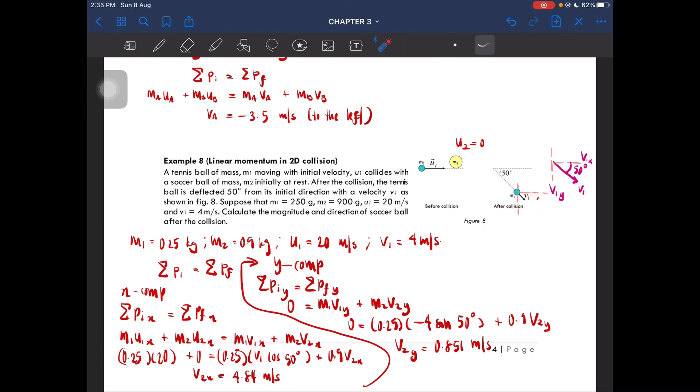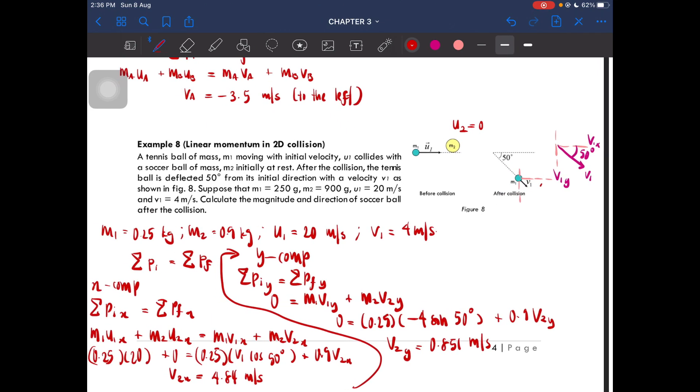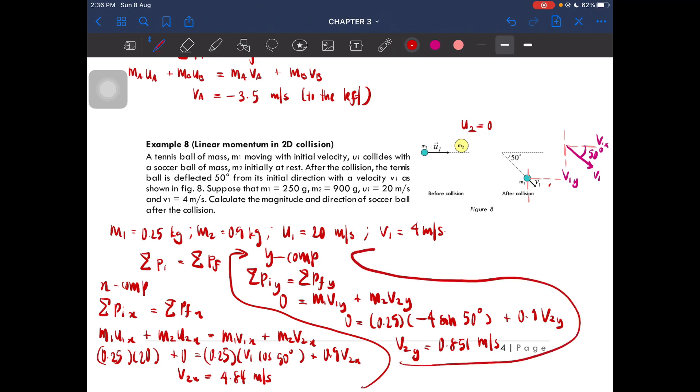This does not end here. We then have to find the magnitude, so the magnitude is square root of v2x squared plus v2y squared. You'll then get the magnitude to be equal to 4.91 meters per second. And then you have to find the direction, which is inverse tangent of v2y over v2x. Then you'll get theta to be equal to 9.97 degrees.